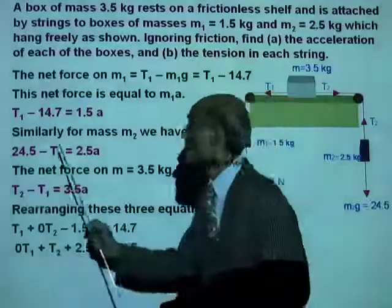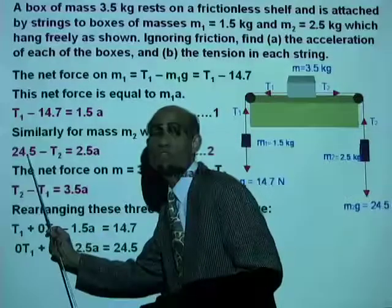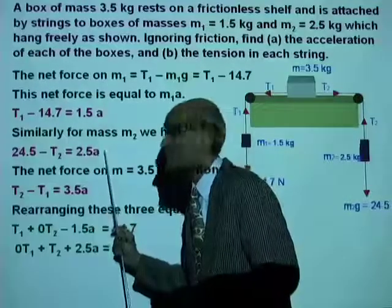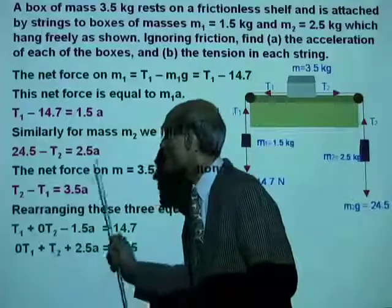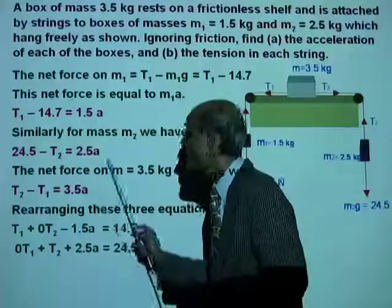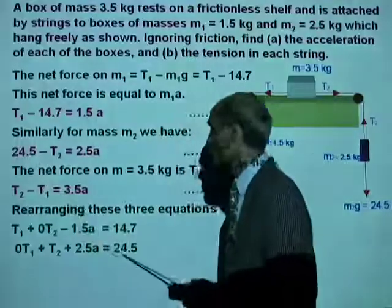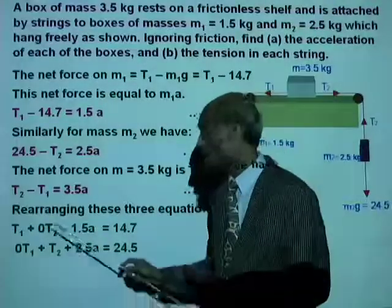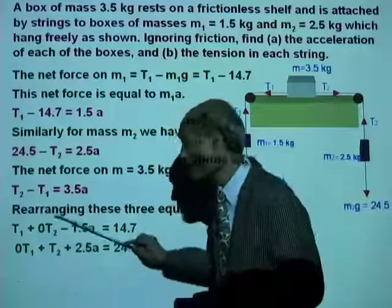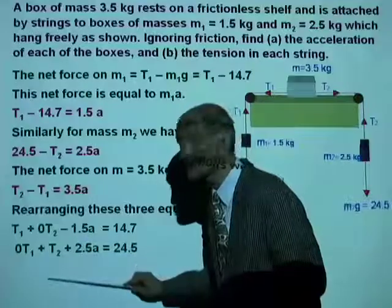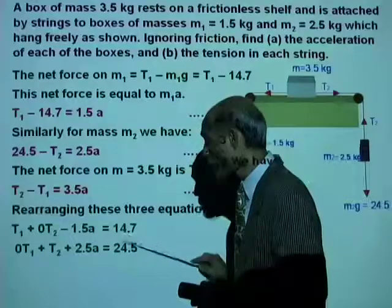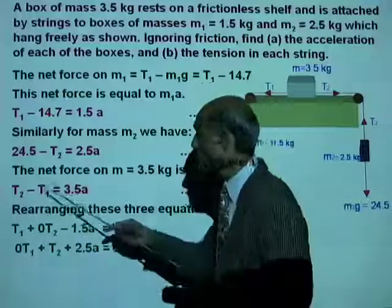That's how I have written it here. What I did is, left the 24.5 on the left, take the negative T2 to the right. So I have 0T1 plus T2 plus 2.5A equal to 24.5. Now look at the way I wrote the equation. All T1s must be the first variable, all T2s the second variable, the A is the third variable, all the constant numbers on the right.